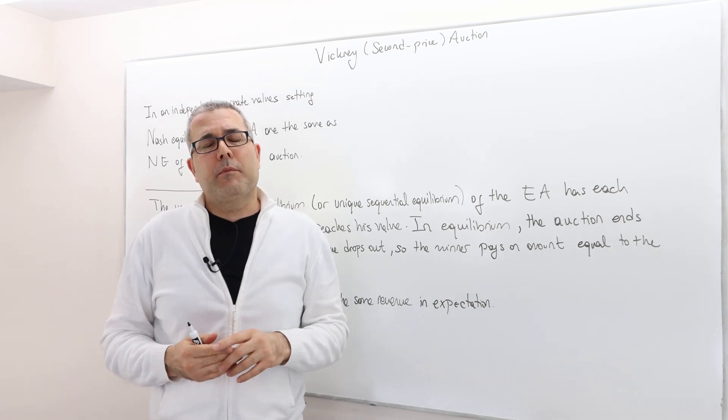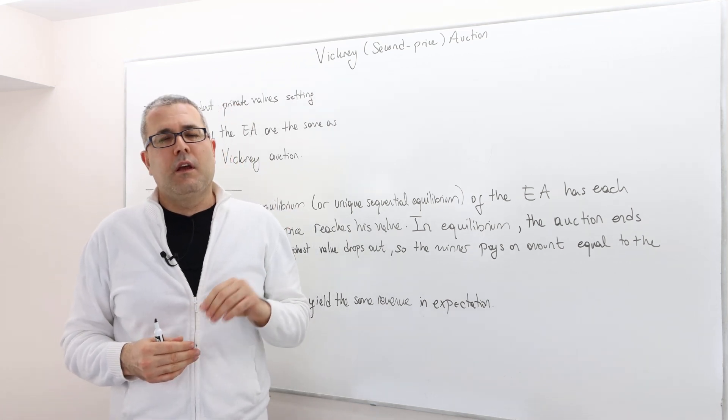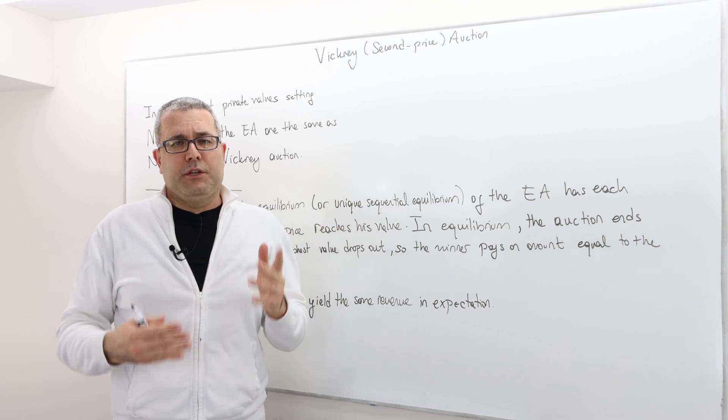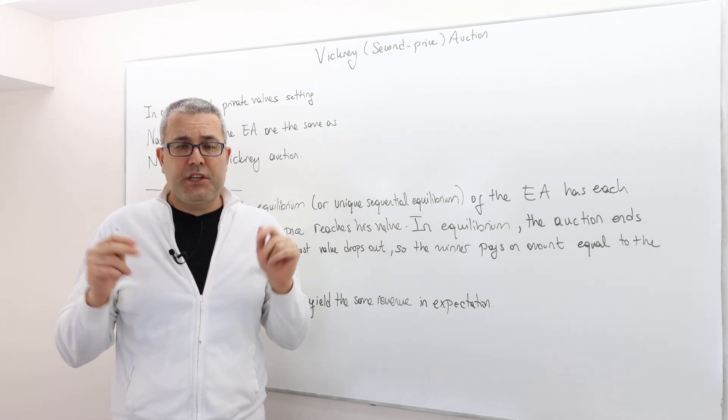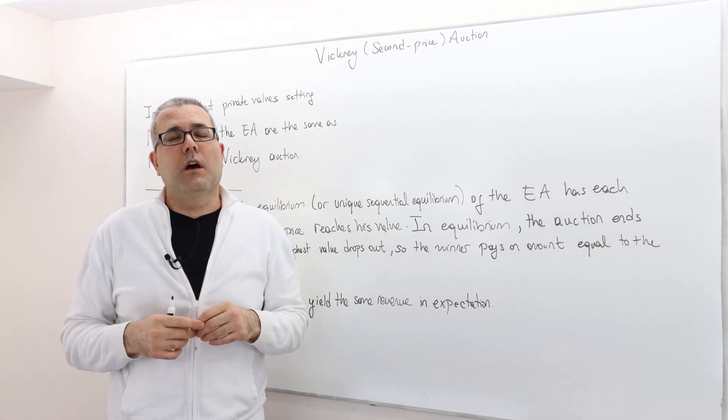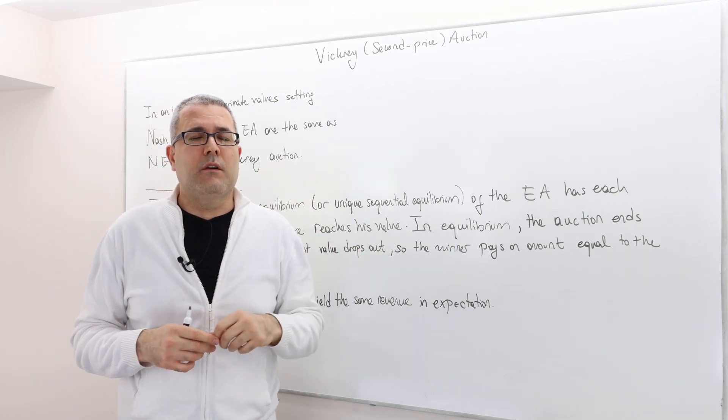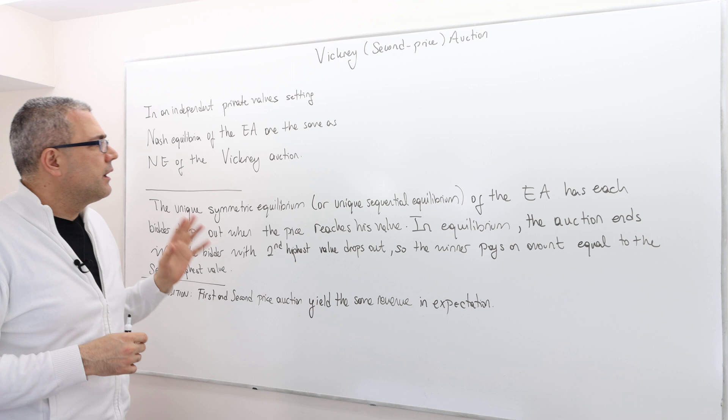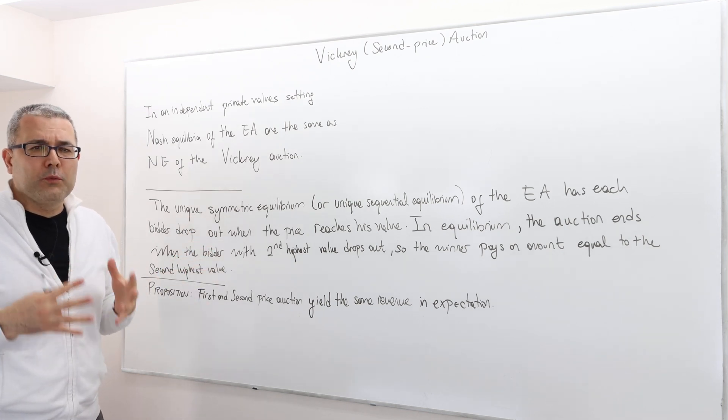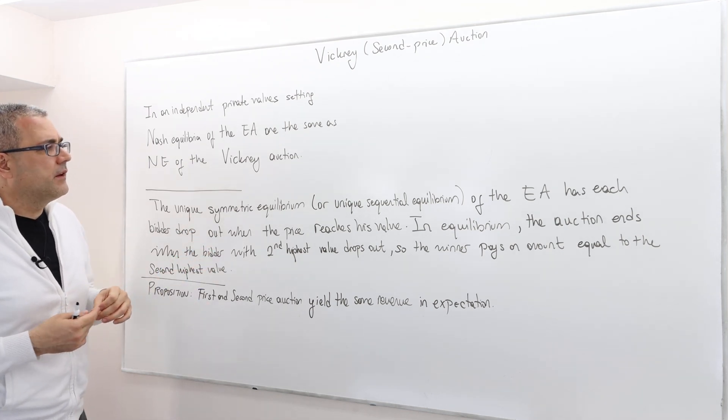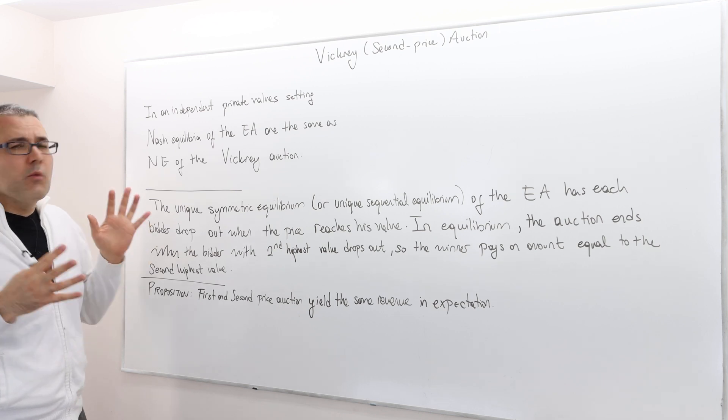Okay, so if you remember at the very beginning, I said the Vickrey auction or the second price auction is strategically equivalent, quote-unquote, with English auction or ascending bid auction. So here is a more formal statement about these two auctions.